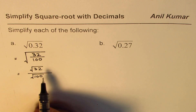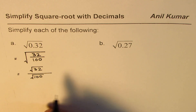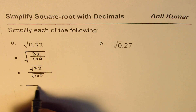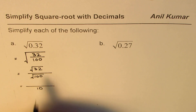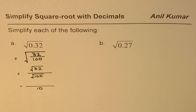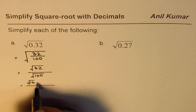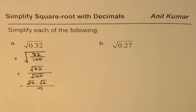By doing this we have changed the decimal number to whole numbers. As you know, square root of 100 is 10, so we write 10 in the denominator. In the numerator, we need to write 32 as a product of two factors where one of them is a perfect square. So 32 can be written as square root of 16 times square root of 2, since 16 times 2 equals 32.